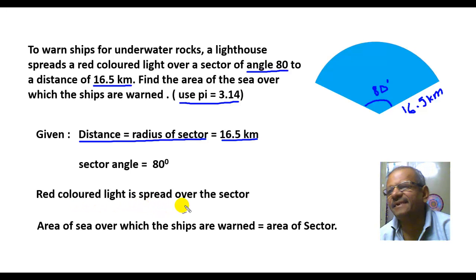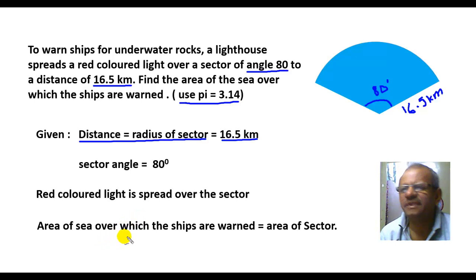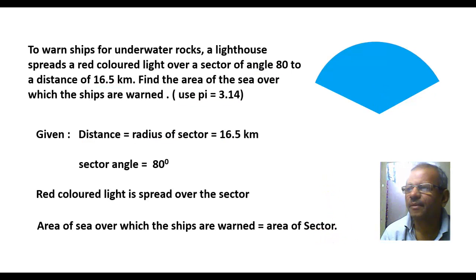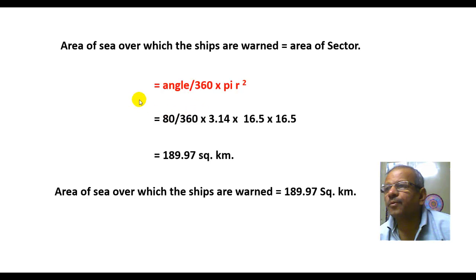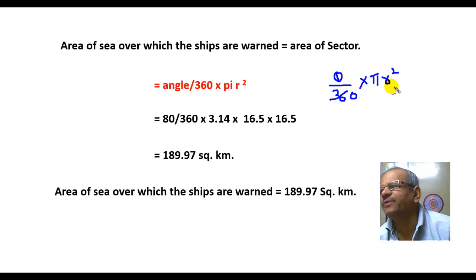The red colored light is spread over this sector, and we have to find the area of the sector. The area of the sea over which the ships are warned is equal to the area of the sector. The area of the sector is given by theta divided by 360, multiplied by pi r squared.